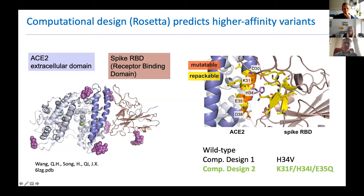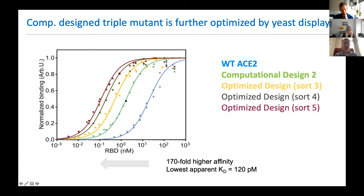The affinity of wild-type ACE2 to the spike receptor binding domain is modest, only 10 to 20 nanomolar. Adam used the structure as a basis for computational design using Rosetta, identifying a region within that interface that could be computationally remodeled. She came up with two computational designs: a conservative single amino acid mutation, and a triple mutation in ACE2 called computational design 2. These ACE2 proteins were displayed on yeast and tested for binding with the spike receptor binding domain, with affinity optimized up to about 170-fold in yeast display, reaching hundreds of picomolar affinity.